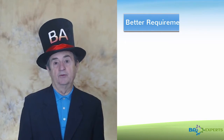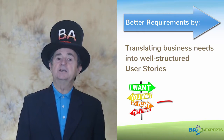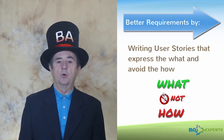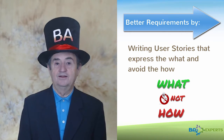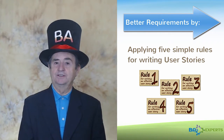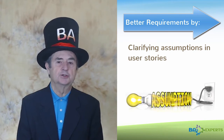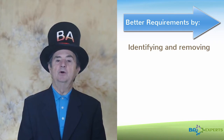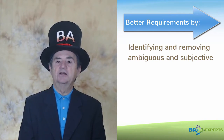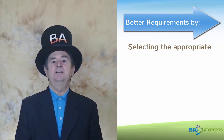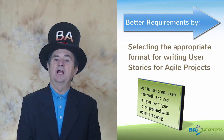Specifically, this course will help you get more and better requirements by translating business needs into well-structured user stories, writing user stories that express the what and avoid the how, apply five simple rules for writing user stories, clarify assumptions in user stories by adding context, identify and remove ambiguous and subjective terms and phrases in your user stories, and selecting the appropriate format for writing user stories for Agile projects.